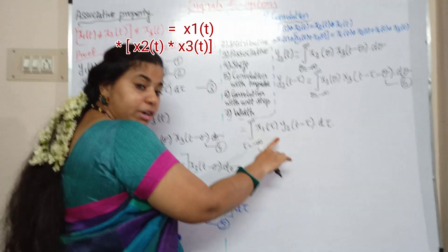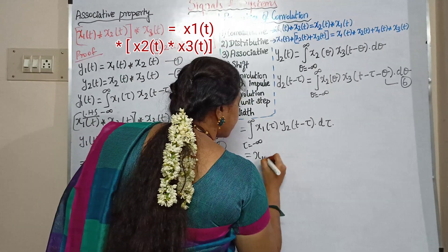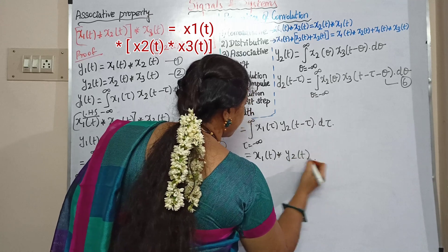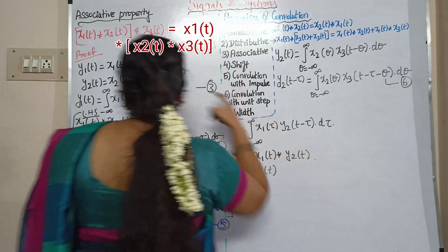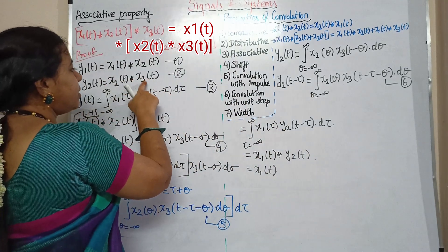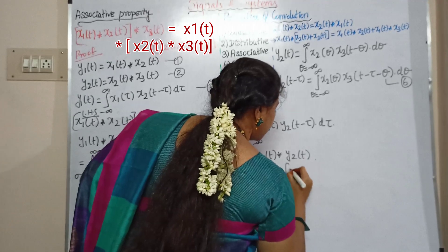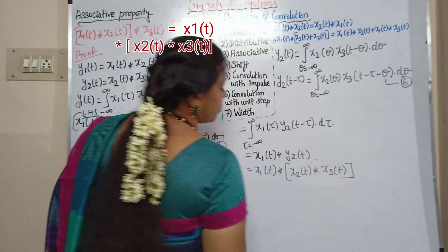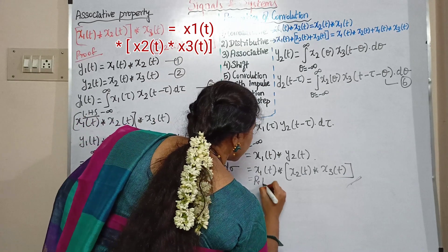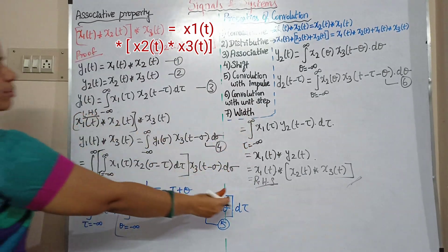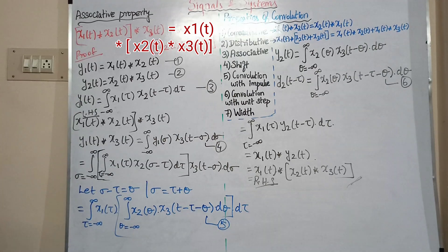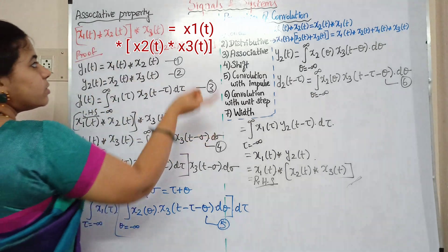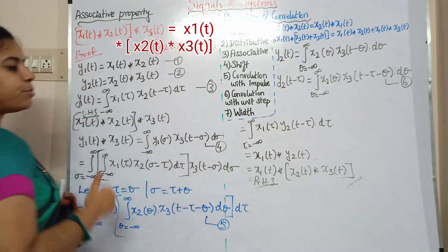What formula is this? It is x1(t) convolution y2(t), which equals x1(t) convolution y2(t), where y2(t) equals x2(t) convolution x3(t). So this is the RHS. LHS equals RHS, hence proved. This is the associative property: convoluting the first with the second and third equals convoluting the first with the second, then with the third.